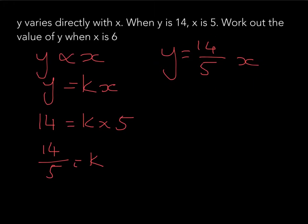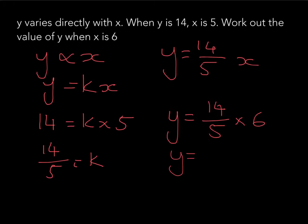We substitute x equals 6 into our equation: y equals 14 over 5 times 6. Multiplying fractions: 14 times 6 — that's 60 plus 24, which is 84, over 5. Does 84 over 5 simplify? No — so we leave the answer as 84 over 5.